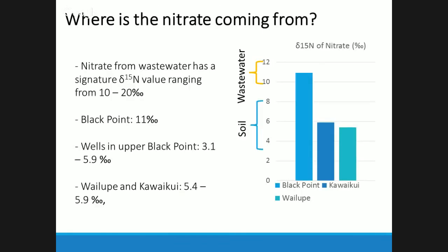To source the nitrate, I used nitrate stable isotopes. Different sources have different isotopic ranges: wastewater has a range of 10 to 20 per mil, soil nitrogen around 4 to 8 per mil, and fertilizers typically around 0. For Black Point, all my samples were around 11 per mil — within the range for wastewater. Between Black Point and Kāne'ohe Kai, samples fell within the range for soil nitrogen.